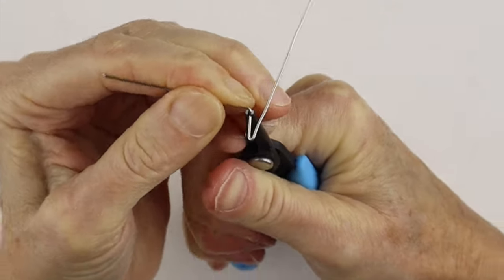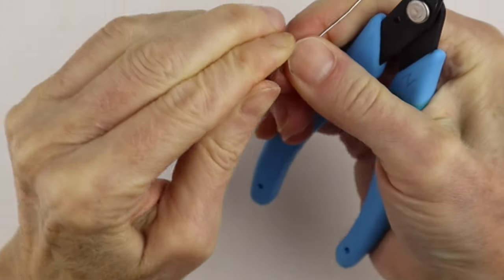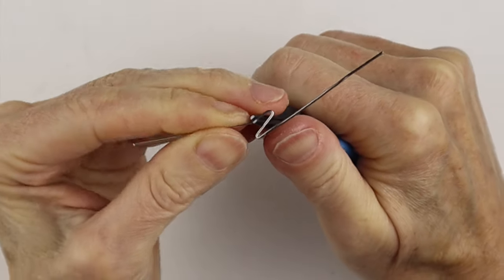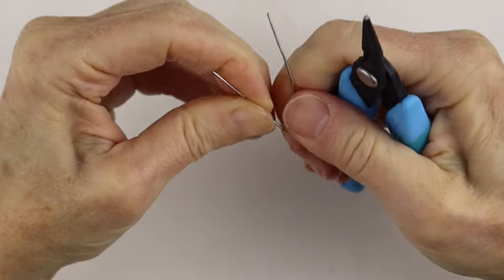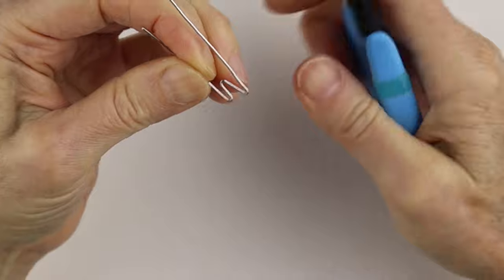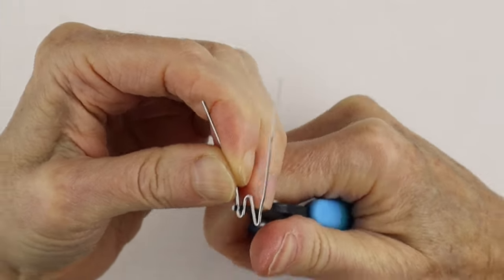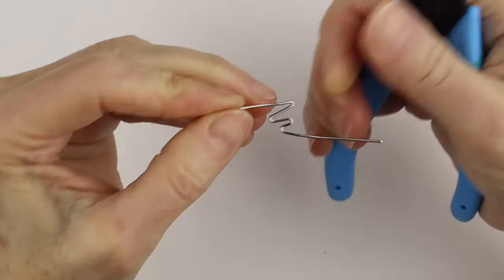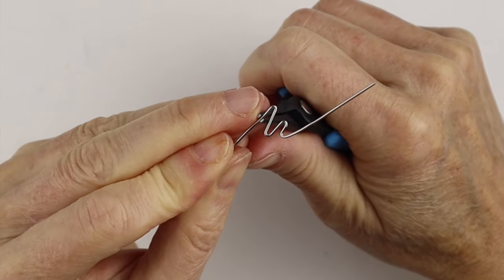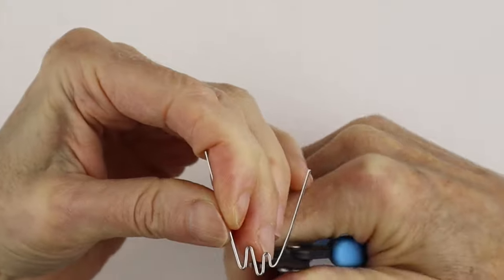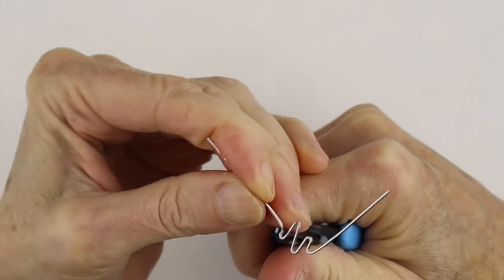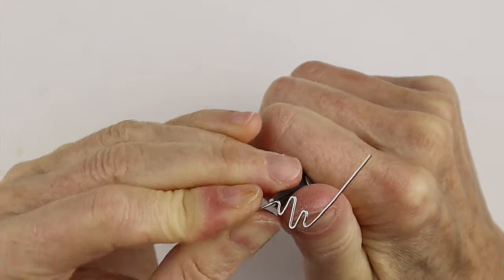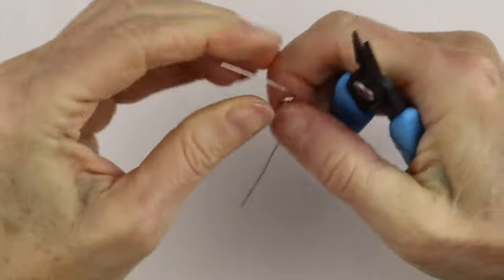It doesn't really matter what the measurements are, just kind of use your eye to see how much you want to bend it. Then just down and then up, and then this side to here we can just bend this here and that way. Then we're going to bend it out, and then this one too.